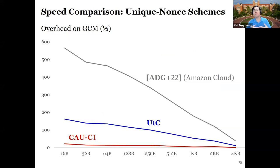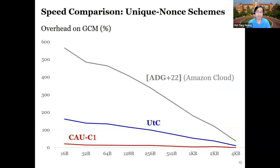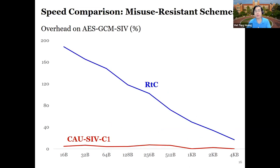Let me give you a visual comparison on the performance of our unique-nonce schemes CUC1 and UTC with the prior work of Hoang et al. that is deployed on Amazon Cloud. As illustrated by the picture, our schemes are a lot more efficient than the prior work, and for CUC1 the overhead is negligible even for small messages. The same trend continues for our misuse-resistant schemes.